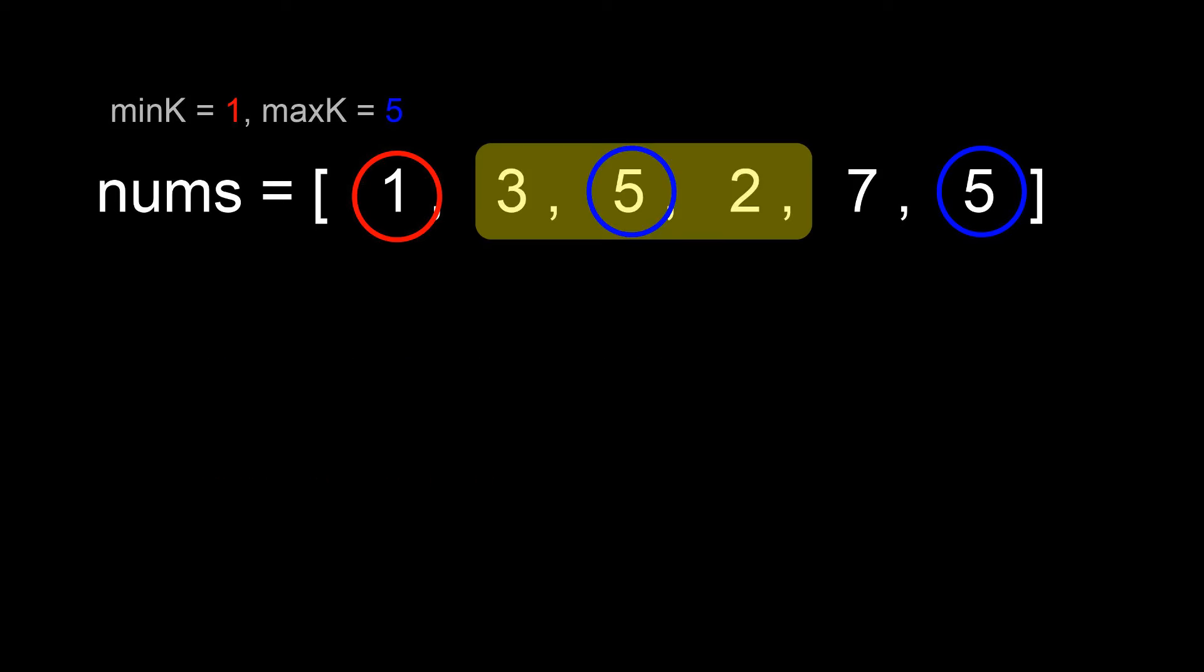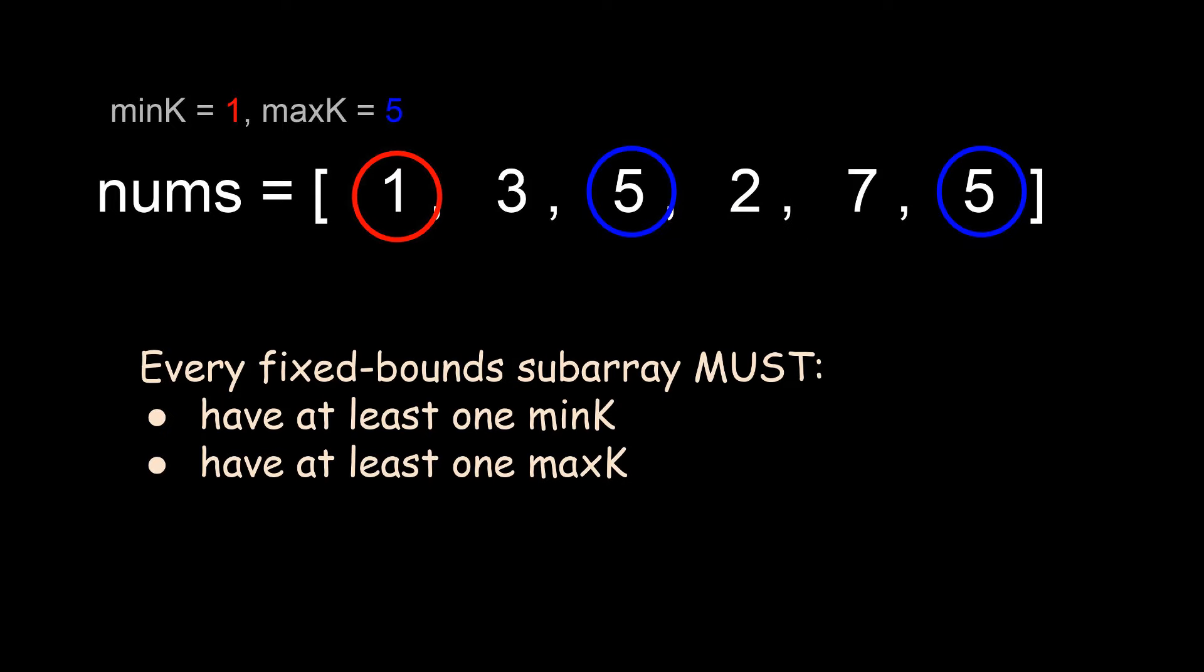If it doesn't, say in the case of 352, then clearly it will never have a minimum equal to min k. The next thing we notice is that these subarrays must never contain a number smaller than min k or larger than max k. If it contains a number larger than max k, let's say 7 in this example, then of course its maximum cannot possibly be 5.